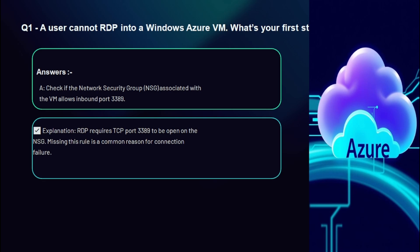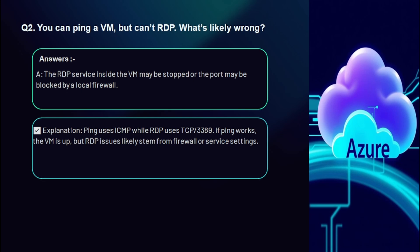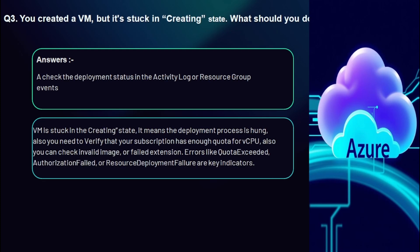Question 2: You can ping a VM but can't RDP — what's likely wrong? In this case, check whether the RDP service inside the VM is running or not — it may be stopped, or the port may be blocked by the local firewall. You can check and disable the local firewall or add a rule in the local firewall. Ping uses ICMP while RDP uses TCP 3389, so you need to enable it appropriately.